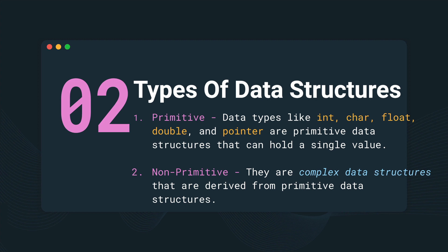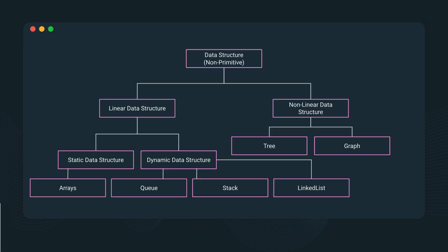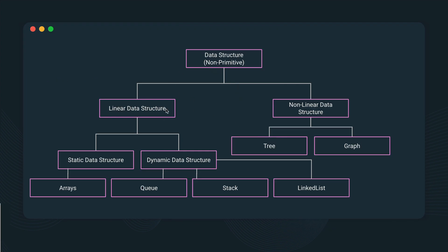Non-primitive data structures are complex and are actually derived from the primitive data structures. Within non-primitive, there are two types: linear and non-linear. Linear are sequential data structures where data is arranged in a sequence, while non-linear is the opposite — where data is not in a sequence. Let's take a look at this classification: in non-primitive we have linear and non-linear.